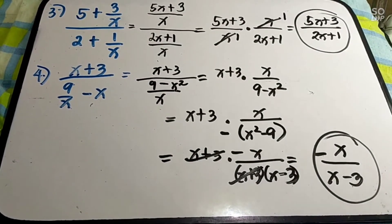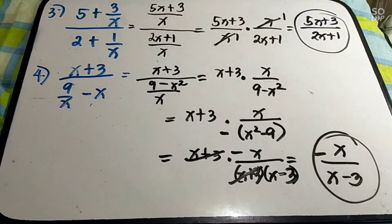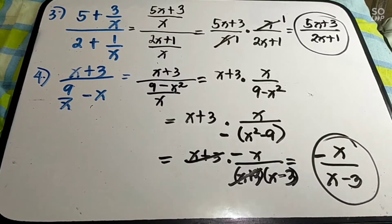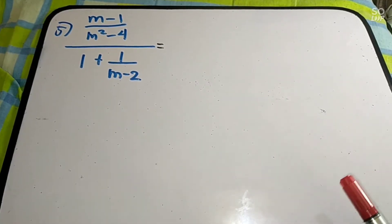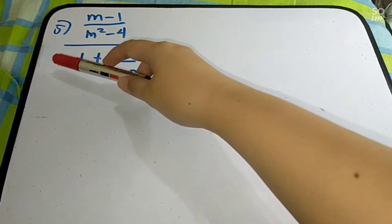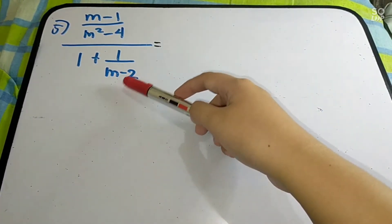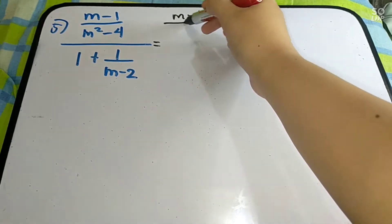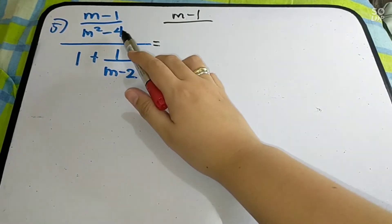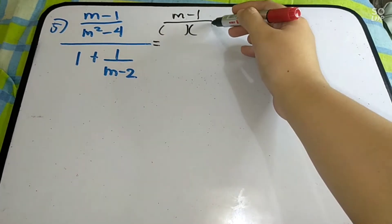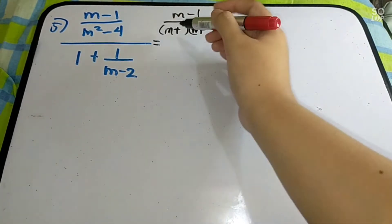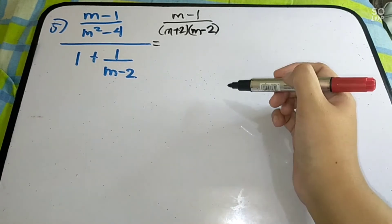We apply all operations of rational expressions here — multiplication, division, addition and subtraction. Let us have more examples. Number 5: (m minus 1) over (m squared minus 4) as your numerator, all over 1 plus 1 over (m minus 2) as your denominator. For the numerator: m minus 1 over m squared minus 4. Factor the denominator — it is a difference of two squares, giving (m + 2)(m − 2).